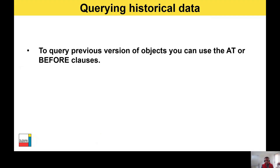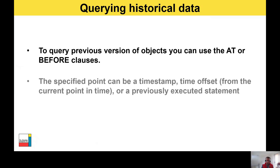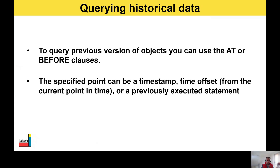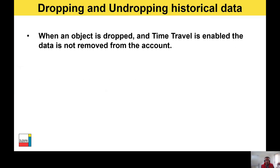To query previous versions of objects, you can use AT or BEFORE clauses. The specified point can be a timestamp, a time offset — which works out a time increment from the current point in time — or a previously executed statement ID.